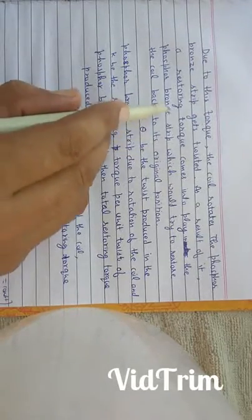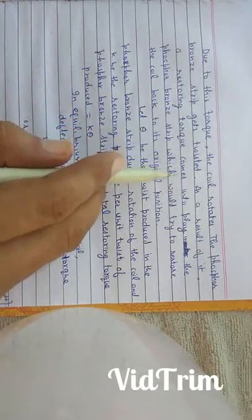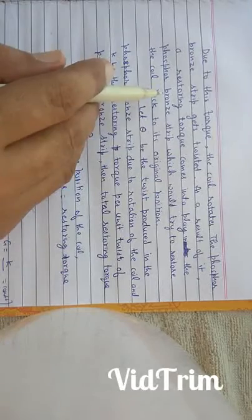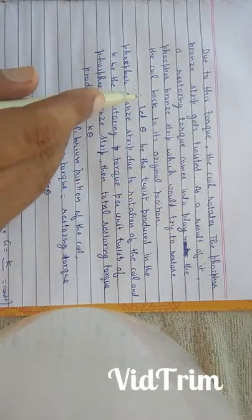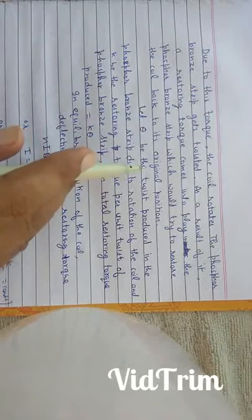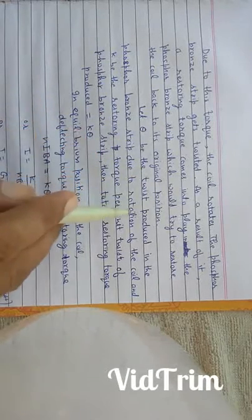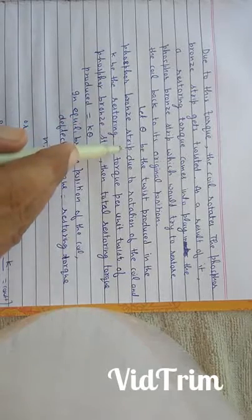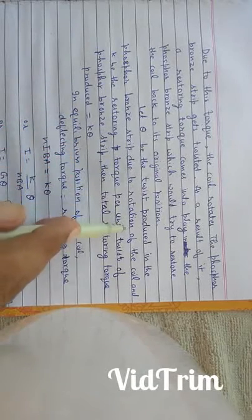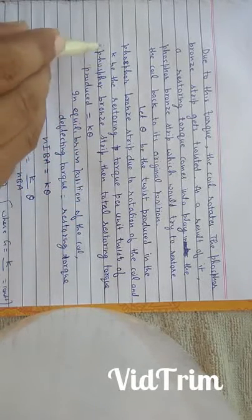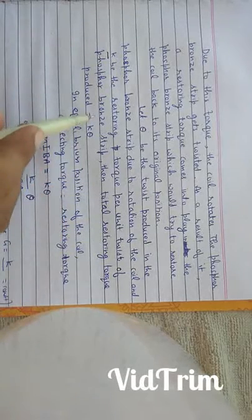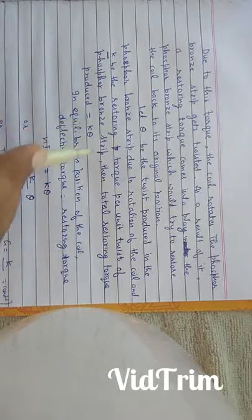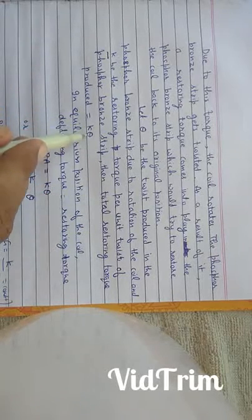As a result of it, a restoring torque comes into play into the phosphor bronze strip, which would try to restore the coil back to its original position. Let theta is the twist produced in the phosphor bronze strip due to rotation of the coil, and K is the restoring torque per unit twist of the phosphor bronze strip. Then, total restoring torque produced is equal to K into theta.